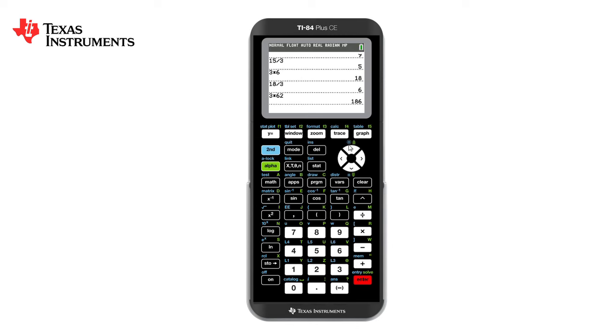If for some reason we want to insert other values we do exactly the same process, arrow to the left until we find where we want to go and then press second delete which does the insert functionality which is in blue above the delete button. This allows us to insert other numbers or other calculations.